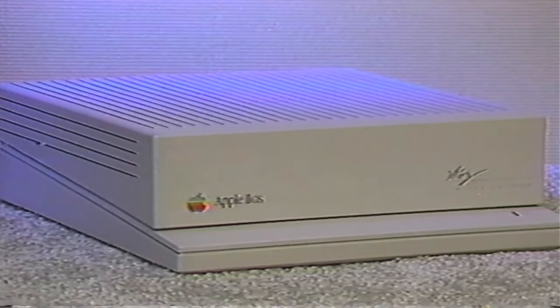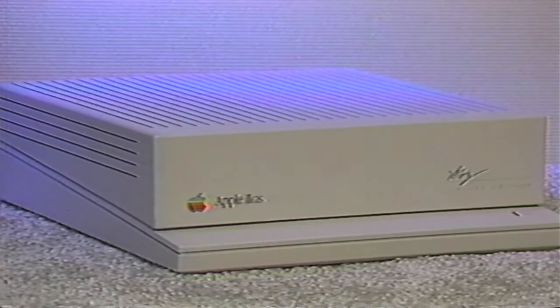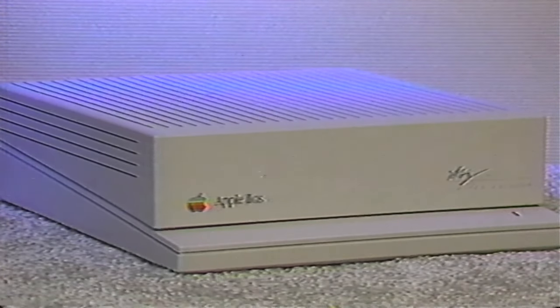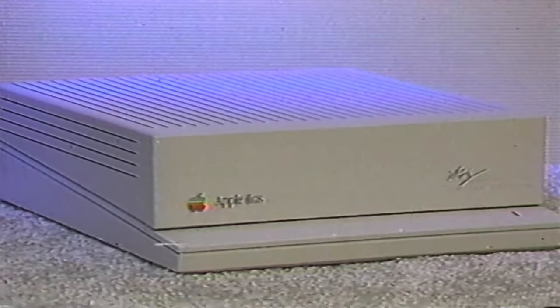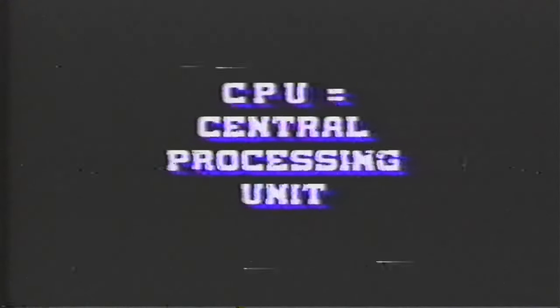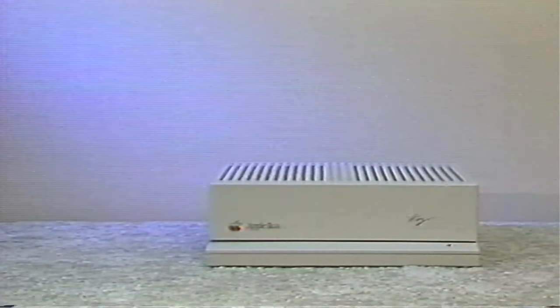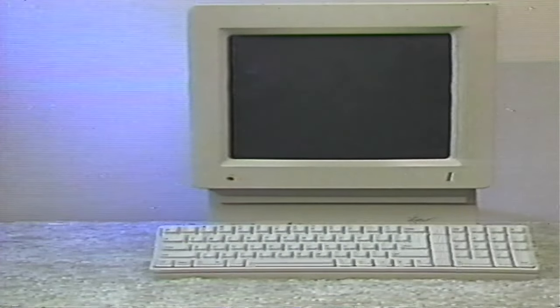Now let me introduce you to our students. They will be learning about the Apple computer along with you. And remember, if you need to review a topic, we never get tired of repeating ourselves. Let's begin this lesson by learning about some of the basic components that usually come with your Apple IIe, Apple IIc, or Apple IIgs computer. The most important component is the Apple computer itself. Several peripheral devices can be plugged into your computer, but the most useful ones are the keyboard, the monitor, and the disk drives.